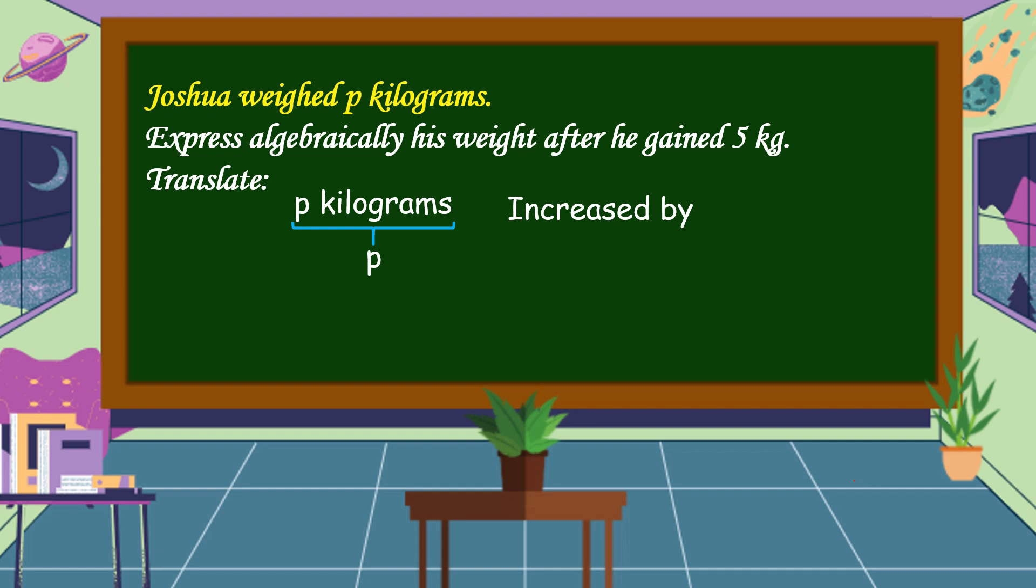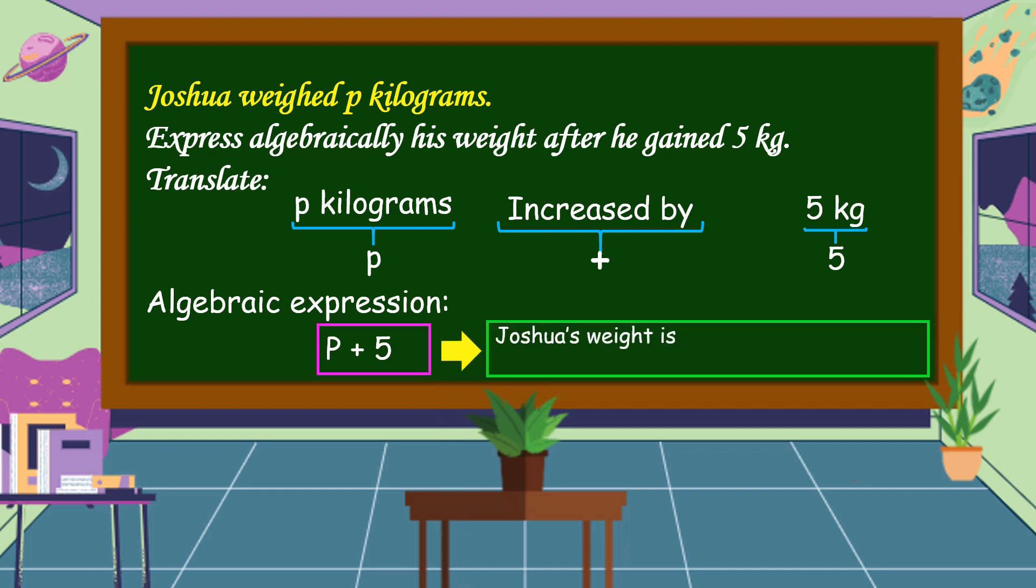So let's make an algebraic expression: p plus 5. This means that Joshua's weight is 5 kilograms more than his p kilograms.